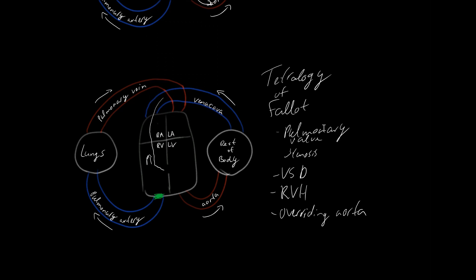Because of the higher right ventricular pressure, the right ventricle also hypertrophies and becomes stronger. These are the first three characteristics: pulmonary valve stenosis, ventricular septal defect, and right ventricular hypertrophy. The fourth defect is an overriding aorta, meaning the aorta overrides the septal defect, allowing blood to flow efficiently into the aorta.